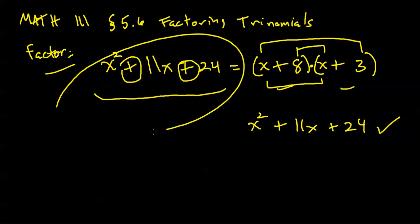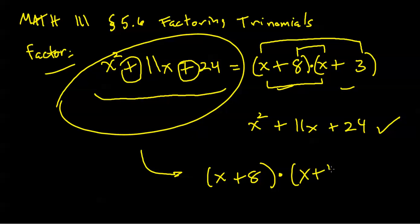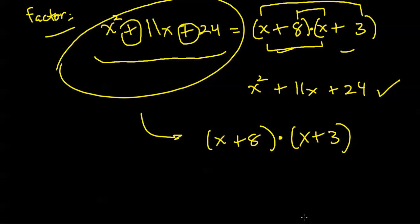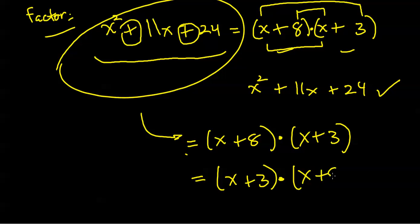So it does check. If I ask you to factor this expression, my final answer should be x plus 8 times x plus 3. Of course, multiplication is commutative, so I can rearrange the order of these factors and still get an acceptable answer. x plus 3 times x plus 8 is similarly acceptable.